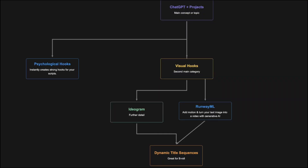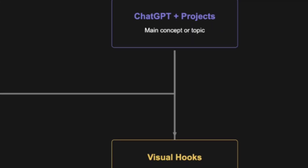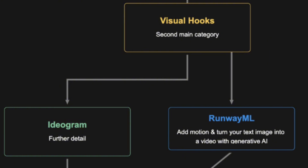Now that you know how to use ChatGPT projects for multi-step workflows and how to create visual hooks with dynamic titles, let's talk about my favorite ways to use AI for high-quality B-roll.